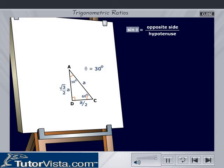Sin theta is given by the opposite side by the hypotenuse. Therefore, sin 30° is equal to A by 2 divided by A, that is equal to half.